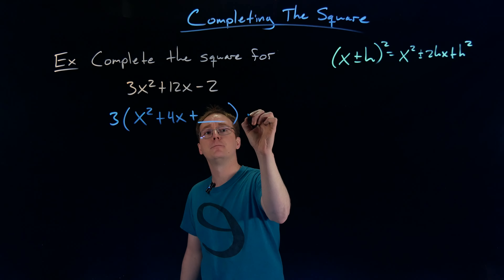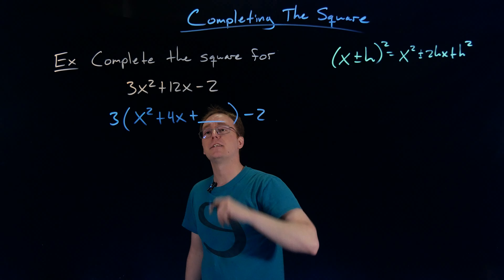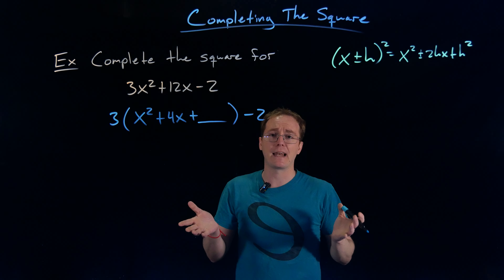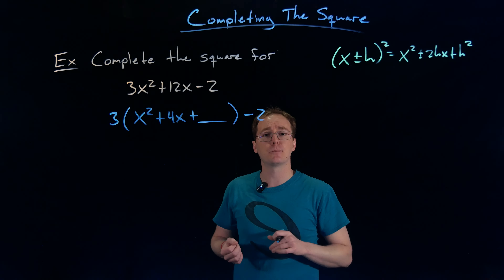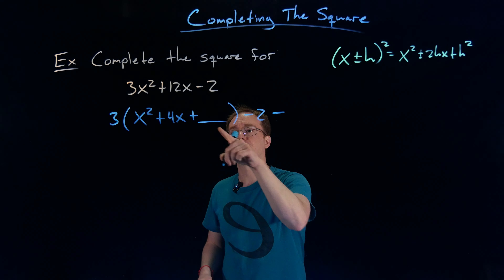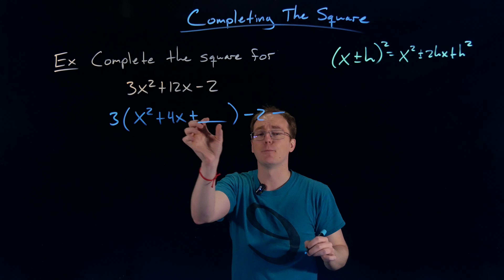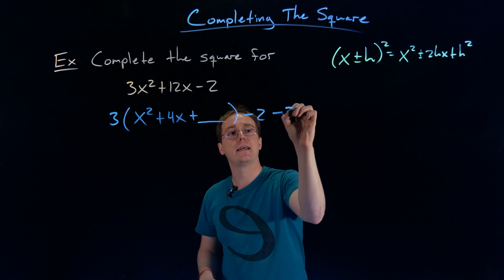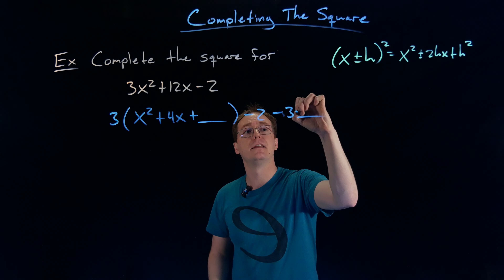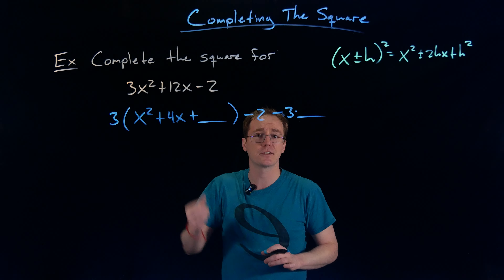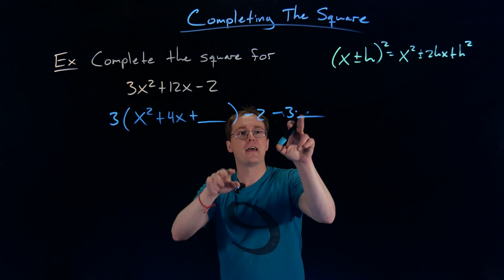We can't forget the minus 2 that is in the original expression and isn't taken into account yet. We're also adding some number in here, and we have to balance that by taking it away outside of the parentheses. But we're not going to subtract just that number, because what happens to it when we put it in the parentheses is it gets multiplied by 3. So we're actually going to have to subtract away three times that number we put in the blank space. That's really what makes completing the square trickier when we're working with an expression that starts with 3x squared rather than just x squared — we have to do this extra factoring step and can't forget about that factor.